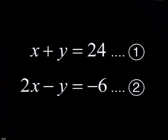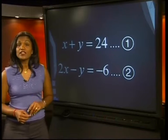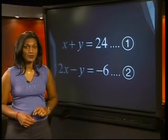Look at this system of equations. x plus y equals 24 is equation 1. 2x minus y is equal to minus 6 is equation 2. Now let me show you some useful steps that we'll use in the substitution method to solve this problem.